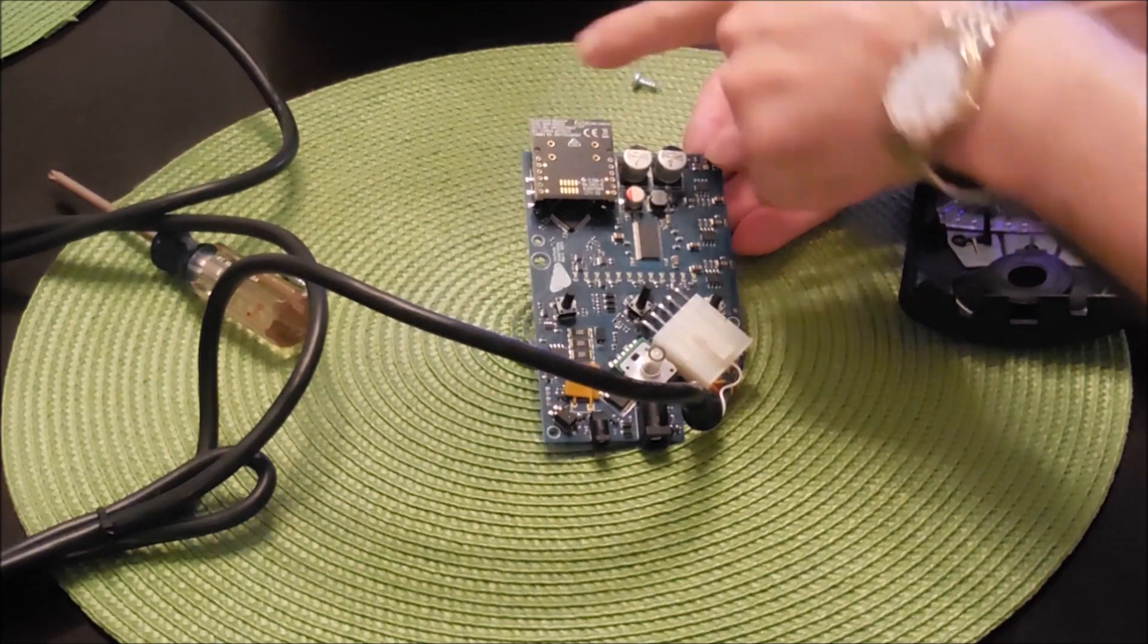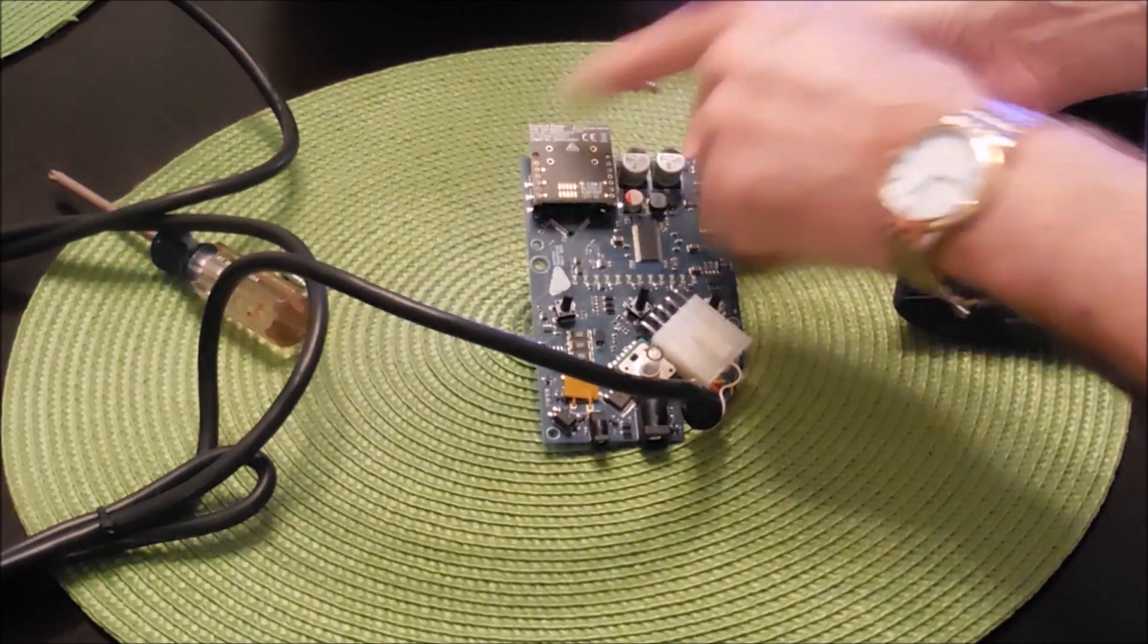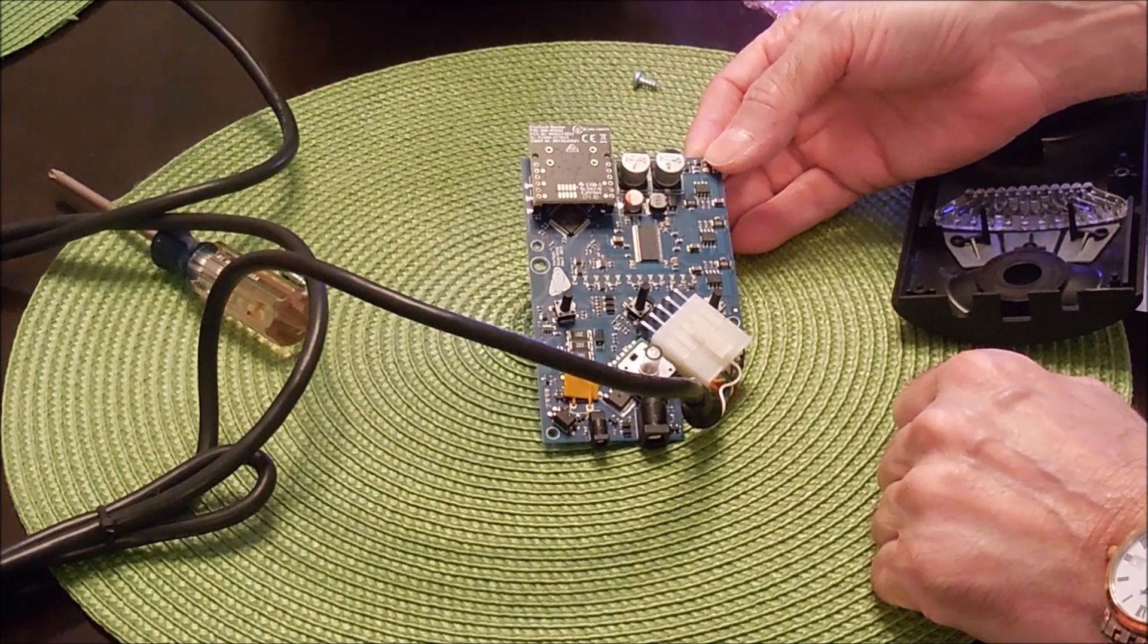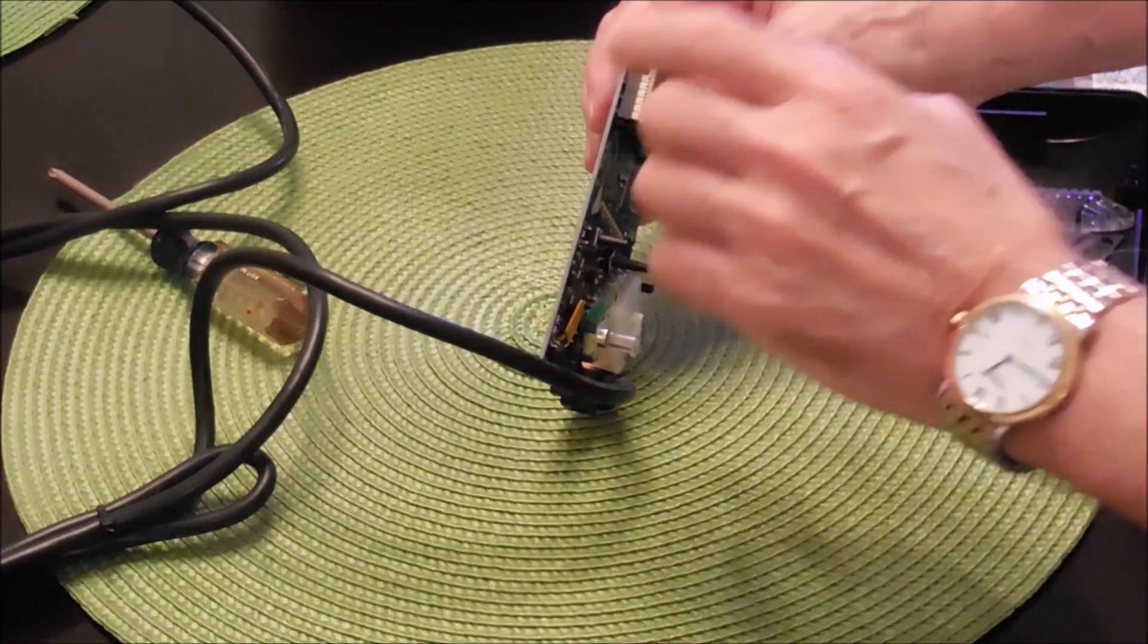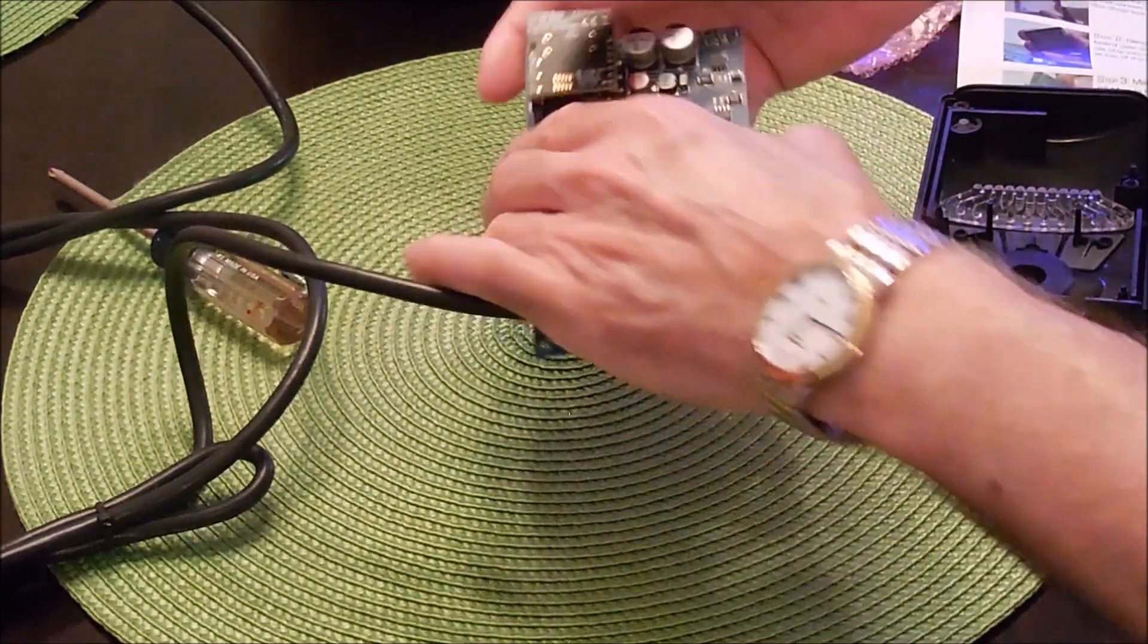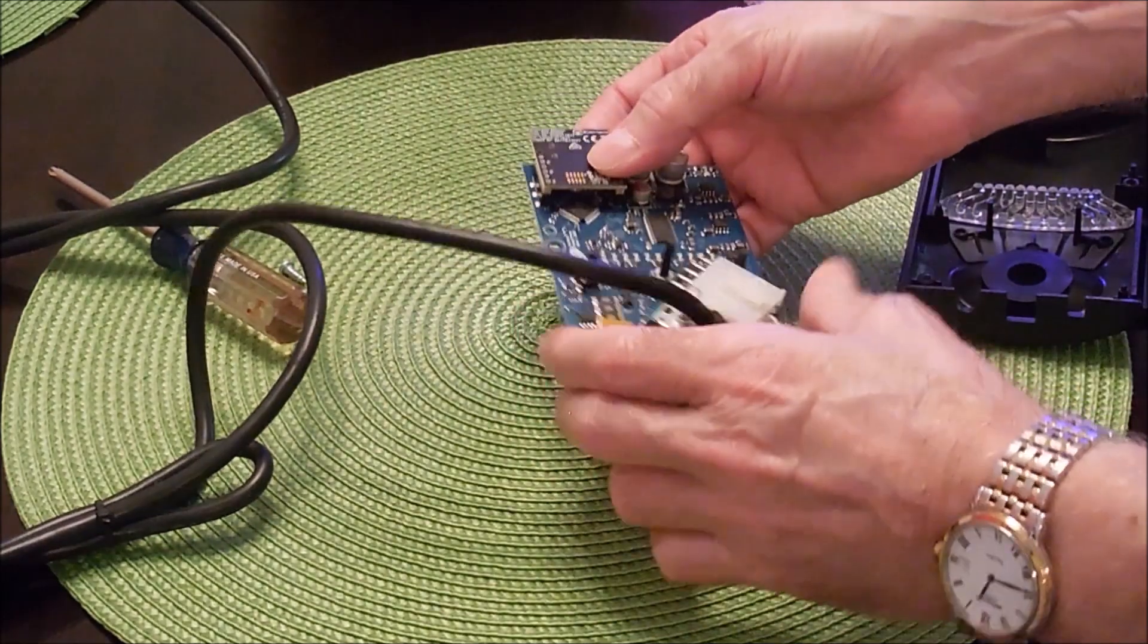Here's the proper installation of the RF module. The module should overlap the actual PC board, as you notice here. It should actually overlap. Make sure that all the prongs are very delicate. They align on both sides and just press them evenly and that's it.